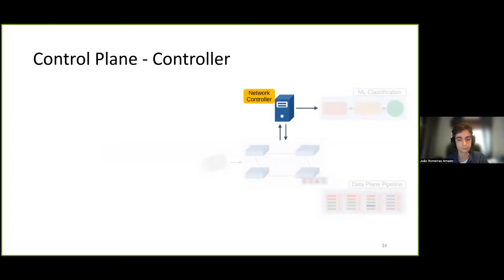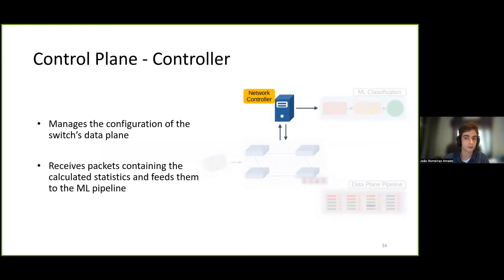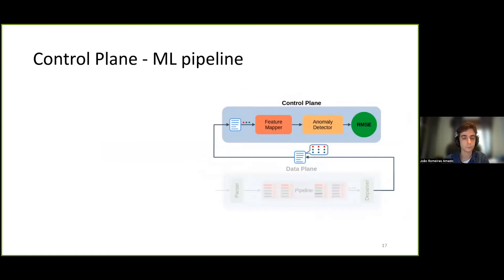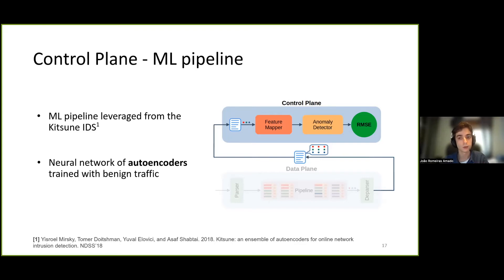Moving on now to the control plane level. Peregrine's controller is responsible for managing the configuration and installing table rules on the data plane switches. Packets containing statistics sent from the data plane are received by the controller, which extracts the statistics from the custom header and feeds them to the machine learning classification pipeline. This classification pipeline that we use on Peregrine is leveraged from Kitsune, a state-of-the-art intrusion detection system that achieved strong detection results using a relatively simple machine learning model. Specifically, it consists of a neural network of autoencoders.